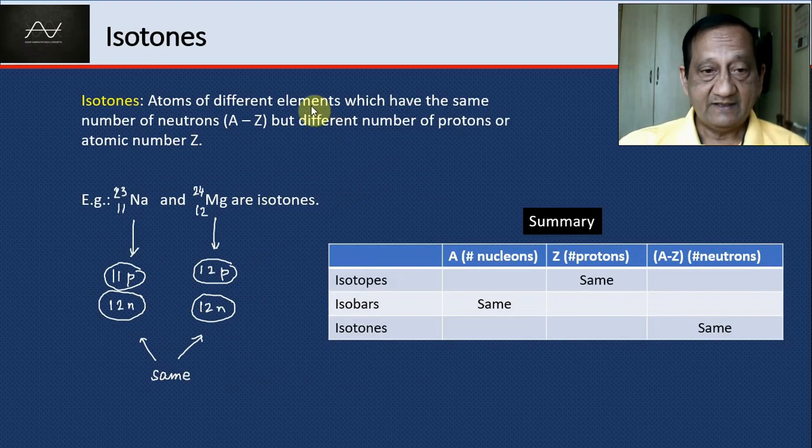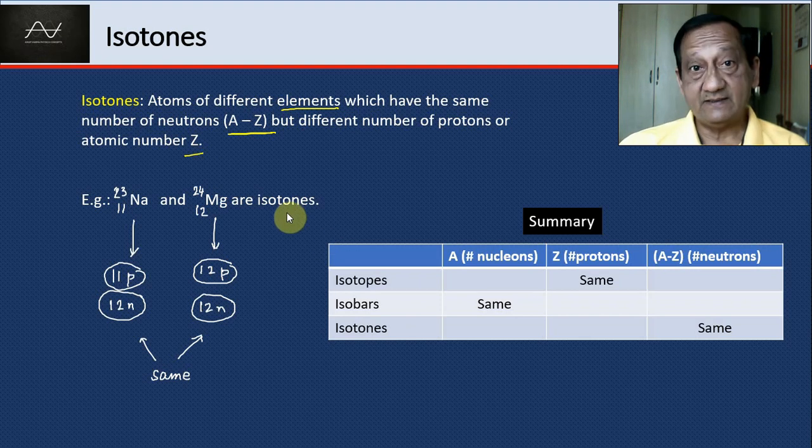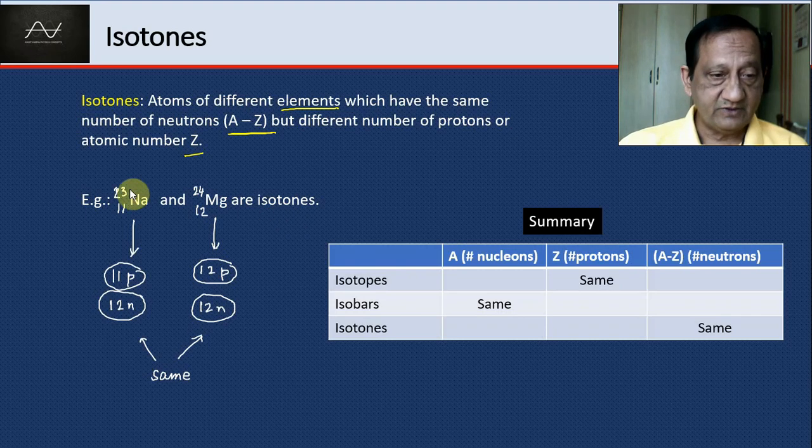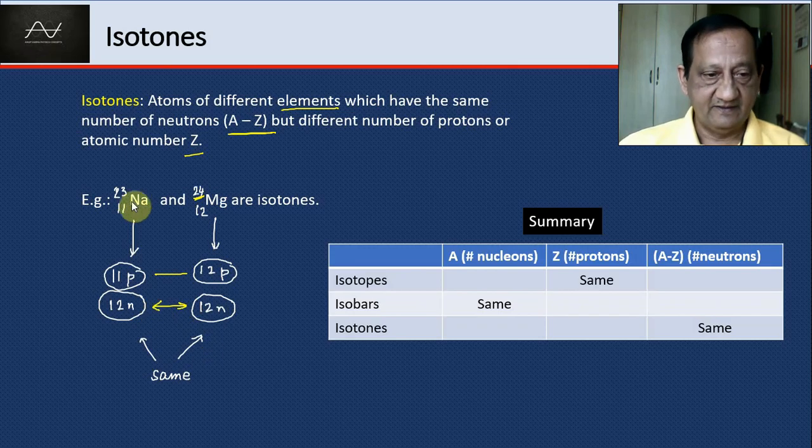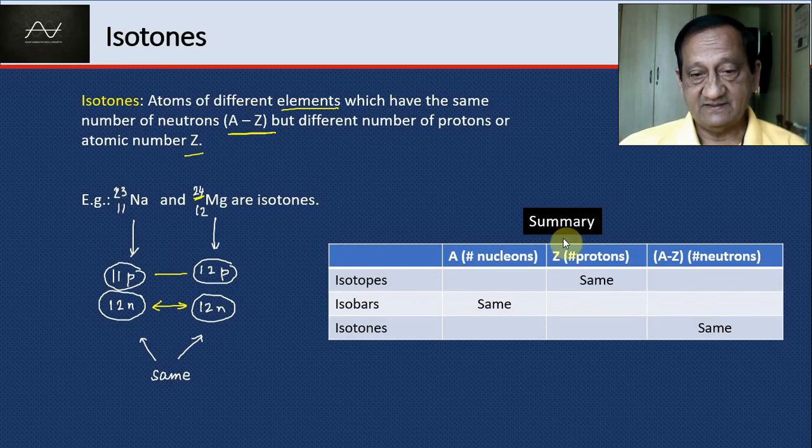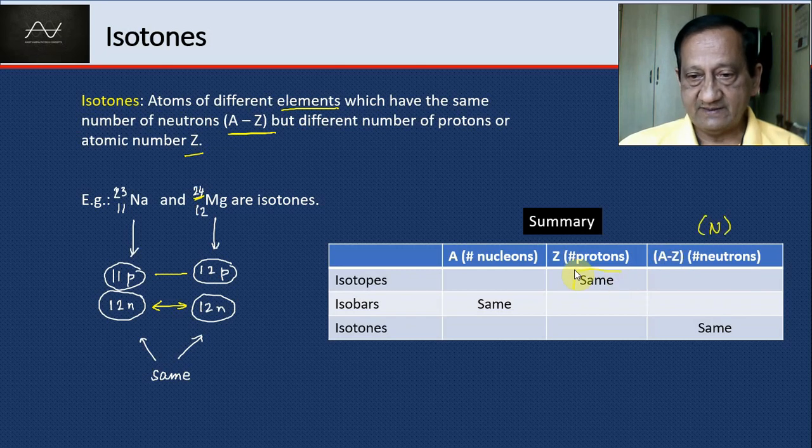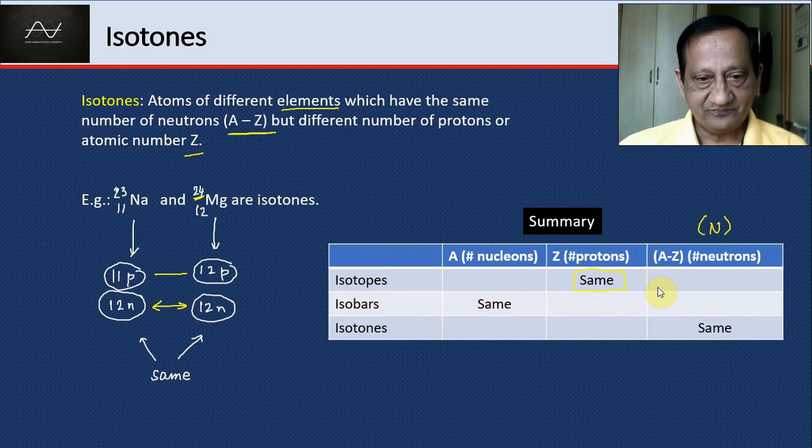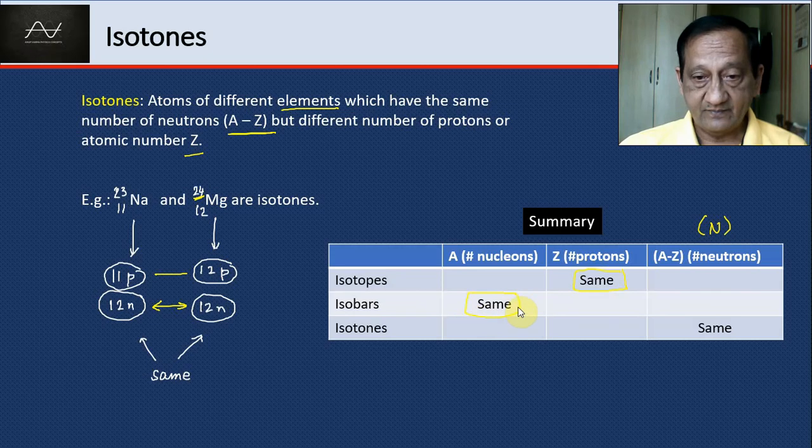Finally, isotones are atoms of different elements but same number of neutrons. Z is different, but A minus Z is the same. Example: 23, 11 sodium and 24, 12 magnesium. The number of protons are different, Z is different, but number of neutrons is the same, so A will be different. To summarize: in isotopes, Z is the same—atoms of the same element. In isobars and isotones, we're talking atoms of different elements because Z is different. In isobar, A is the same; in isotone, N is the same.